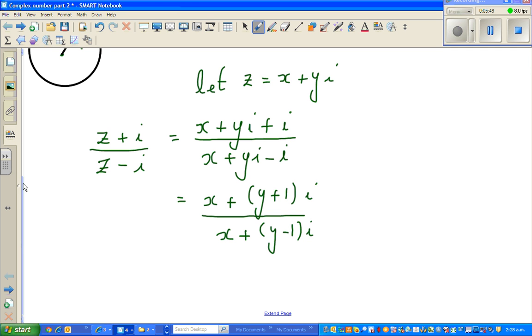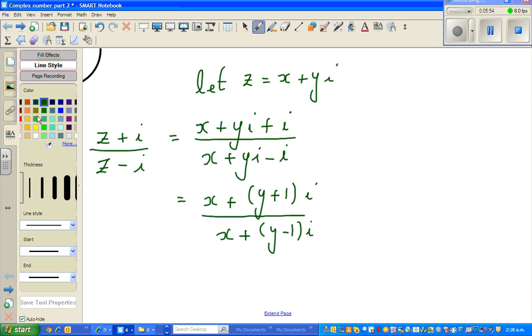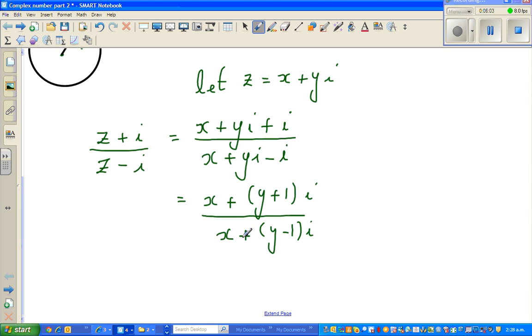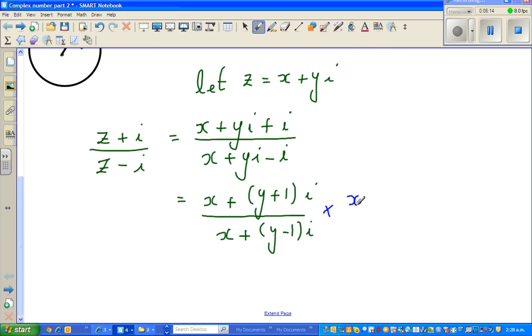From this step, to go further you have to do something which you have to remember - multiply by the conjugate. Let me take a brighter color. I'm going to multiply the numerator and denominator by the conjugate of the denominator. The conjugate is x - (y - 1)i over x - (y - 1)i.